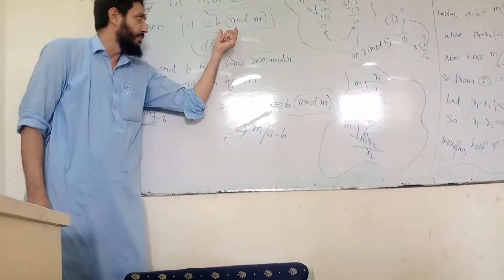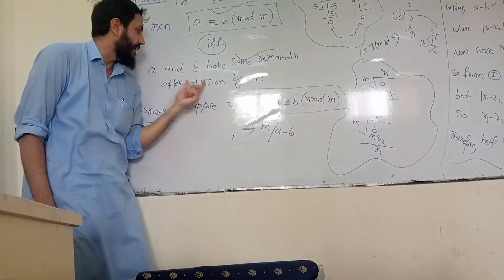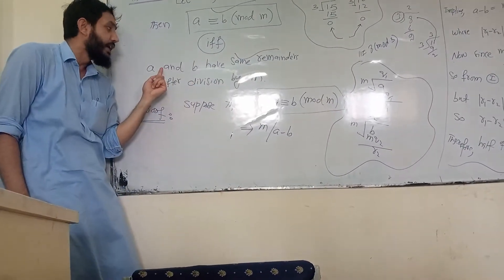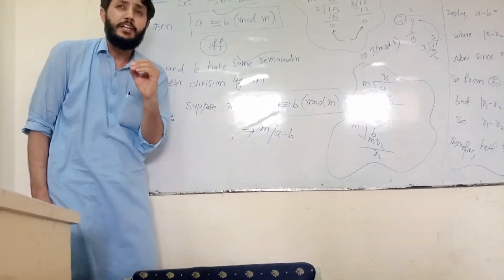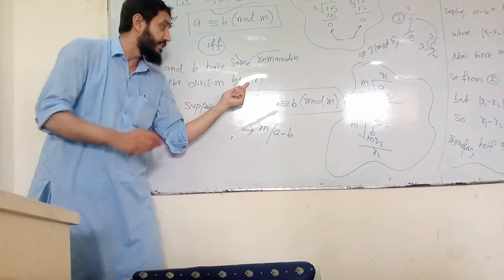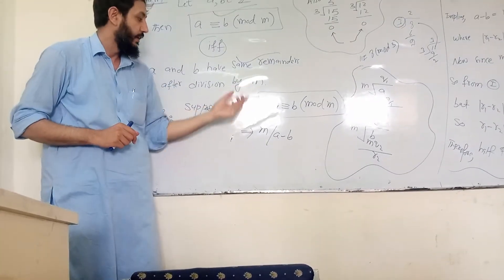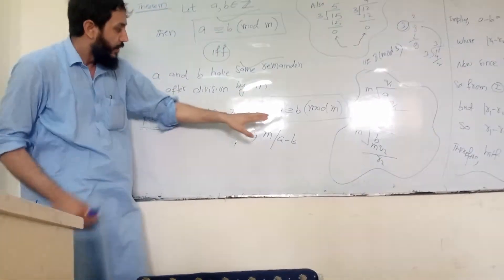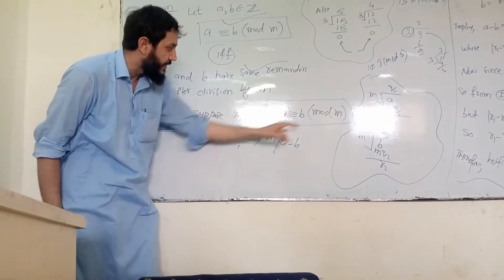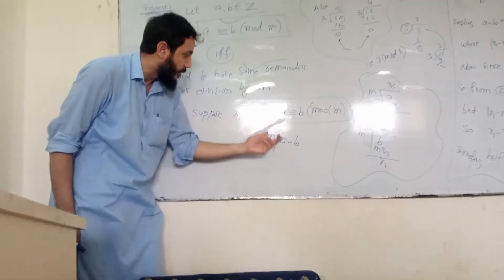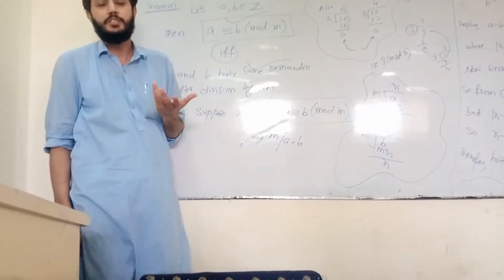We suppose A is congruent to B, and we suppose A and B have the same remainders after division by the modulus. Now, if they are congruent by definition, it means that M divides the difference A minus B.